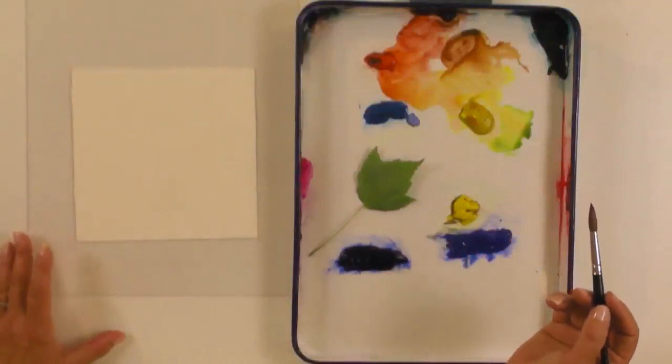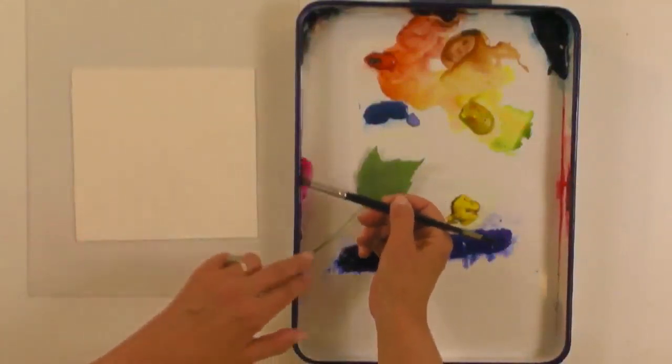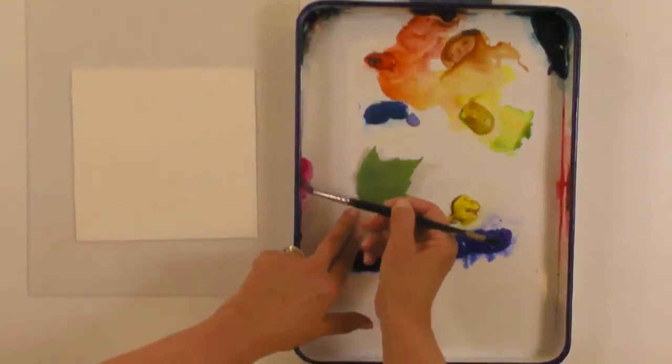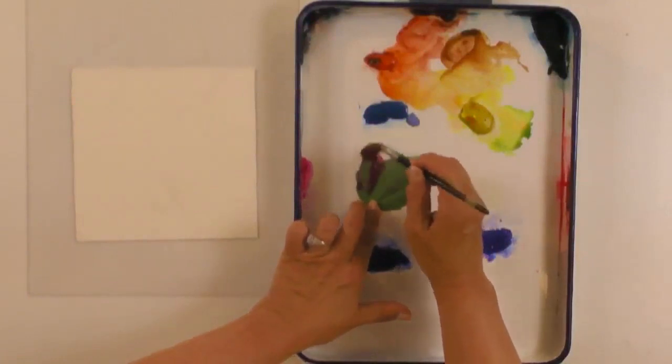I'm just going to take a heavy consistency of magenta. I could use any color for this because I'm just showing you how to do this. You can see that it's fairly thick paint, not too thick—it still spreads easily.